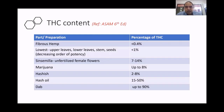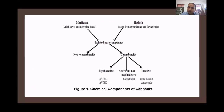In a cannabis plant, the fibrous hemp stem contains less than 0.4% THC. Upper leaves contain the highest potency, lower leaves are next, followed by the stem and seeds. Sinsemilla potency is increased up to 7–14%, marijuana up to 8%, hashish 2–8%, hash oil up to 50%, and dabbing concentrates up to 90%. Overall, non-cannabinoid and cannabinoid products are present, with psychoactive products like THC and active but non-psychoactive cannabinoids among them.